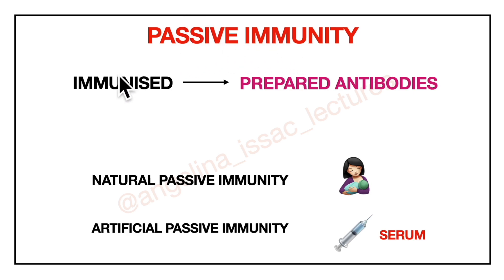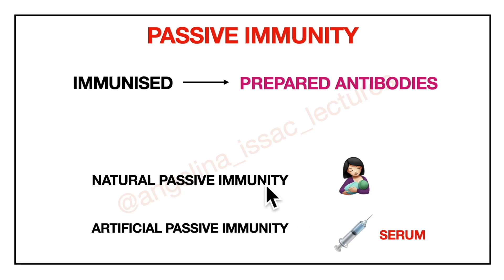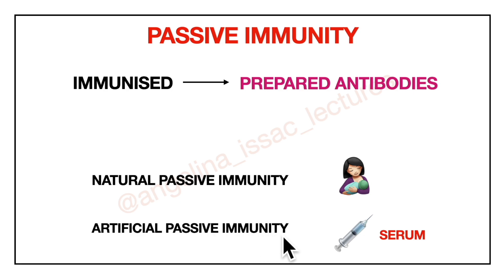In passive immunity, the subject is immunized by prepared antibodies and body cells do not take any active part in the production of immunity. Natural passive immunity involves transmission of antibodies from mother to fetus through the placenta, and also through colostrum and milk during the first few years of life. Artificial passive immunity is produced by injection of serum of animals that have been actively immunized. Examples are antitoxic serum, antibacterial serum, and convalescent serum.